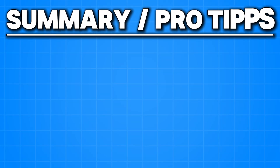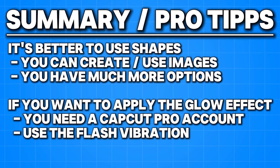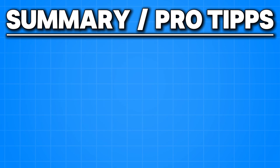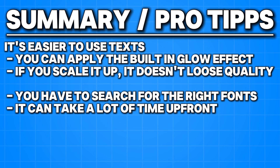Here's a quick summary and some pro tips from today's video. It's better to use shapes because you can create or use images, giving you much more options. But if you want to apply the glow effect, you need a CapCut Pro account for the flash vibration effect. It's much easier to use texts and you can apply the built-in glow effect. Also if you scale it up, it doesn't lose quality compared to images, but you have to search for the right fonts, so it can take a lot of time up front.